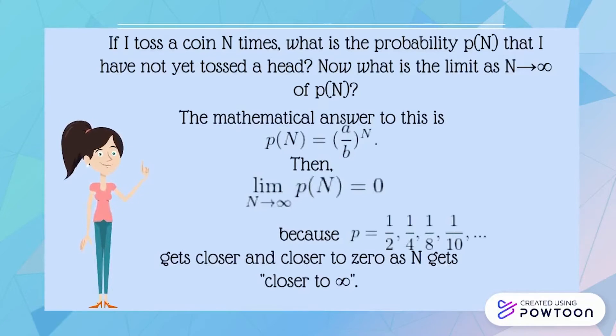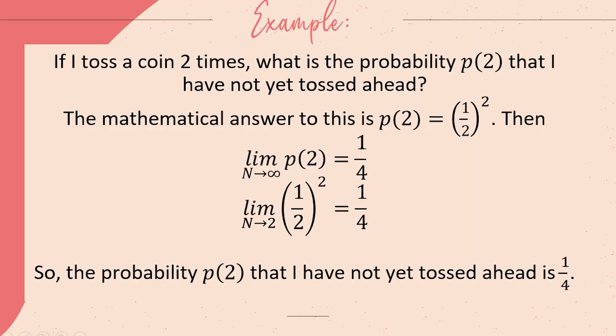Now I want to give you all one practice about that pattern. If I toss a coin two times, what is the probability p(2) that I have not yet tossed a head? To answer that question we can replace N by 2, and it can be p(2) equals (1/2)^2. Then the limit of p(2) for N approaches infinity equals 1/4. So the probability p(2) that I have not yet tossed a head is 1/4.